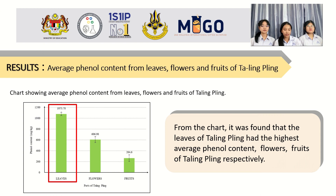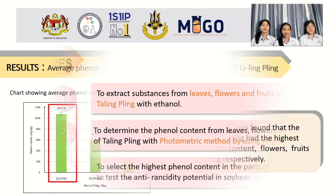From the chart, it was found that the leaf of bilimbi has the highest total phenol content, followed by the flower and fruit of bilimbi, respectively.